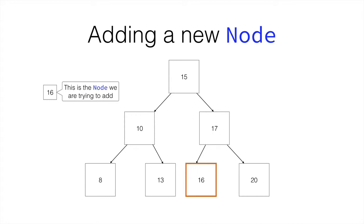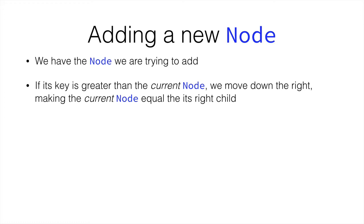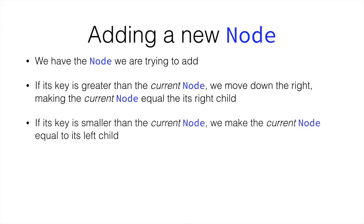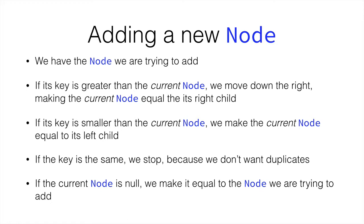This is how we create a new node — let's see this in text. We have a node we're trying to add. If its key is greater than the current node, we move down the right, making the current node equal to its right child. If the key is smaller than the current node, we make the current node equal to its left child. The current node is the marker node. If the key is the same, we stop because we don't want duplicates. If the current node is null, we make it equal to the node we're trying to add.